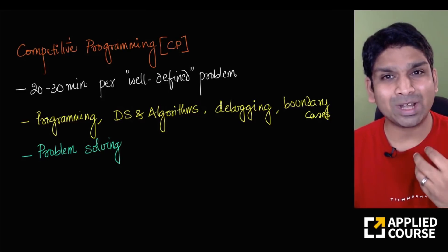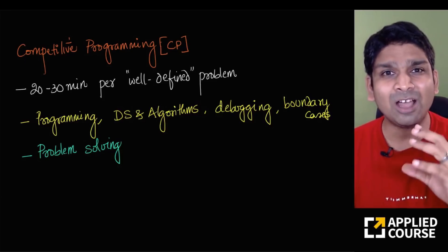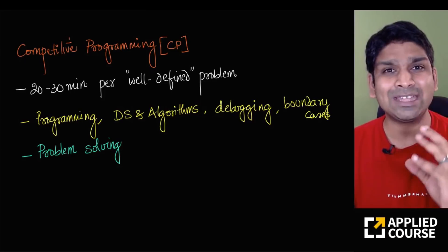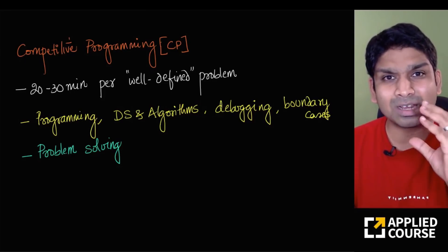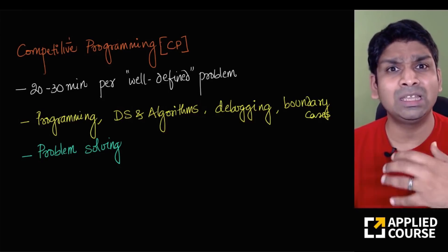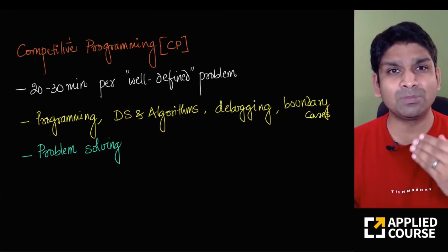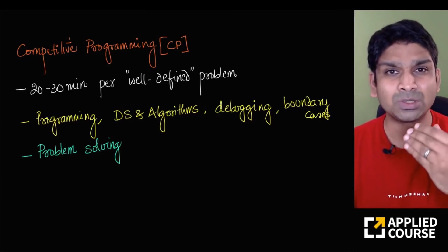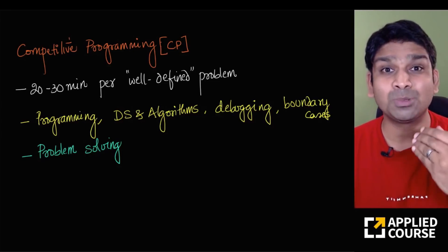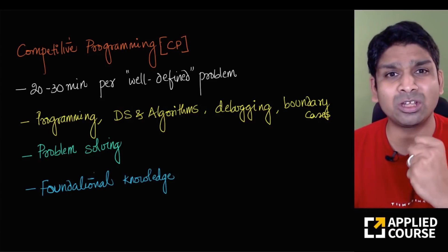These are the four most important skills for competitive programming. What competitive programming is trying to test is your problem-solving skills — given a very defined problem with clear inputs and outputs, can you write code for it in a given restricted period of time? Problem-solving is an extremely important skill in the workplace because it is a transferable skill. Good problem-solving skills from one domain can be transferred to other domains.